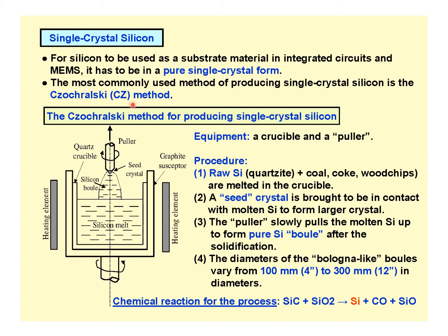In the Czochralski method, we have a crucible-like structure in which the raw silicon — a combination of all those materials — is melted. When it is in the molten form, the seed crystal is contacted onto the molten silicon, and the crystalline structure begins to form. By using a puller, the molten silicon is slowly pulled upward, producing a pure silicon boule that becomes solidified.